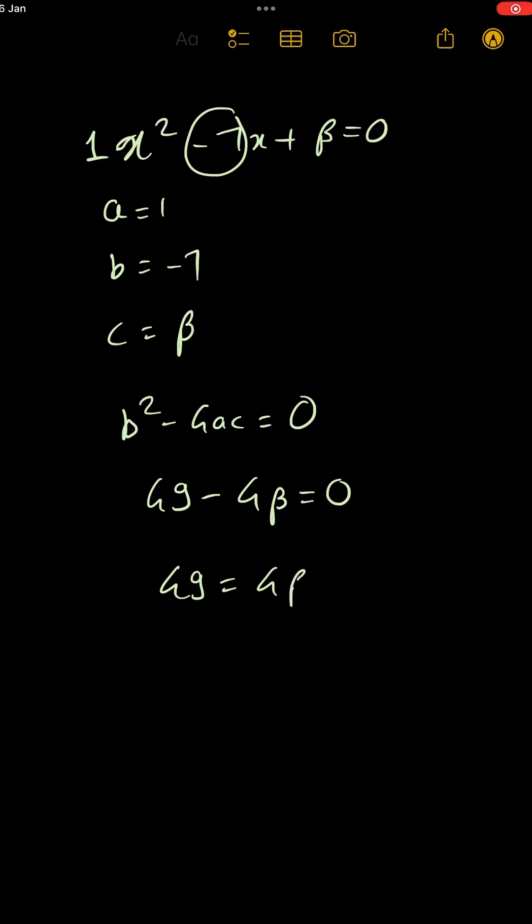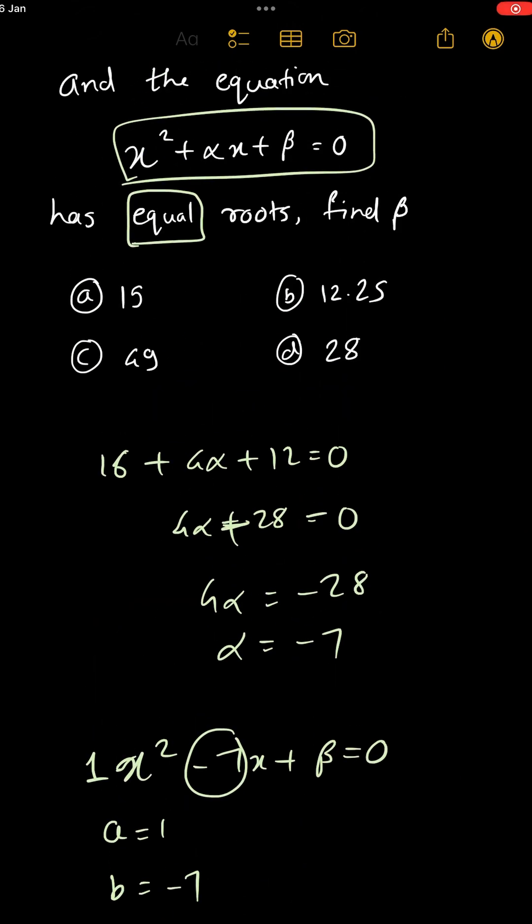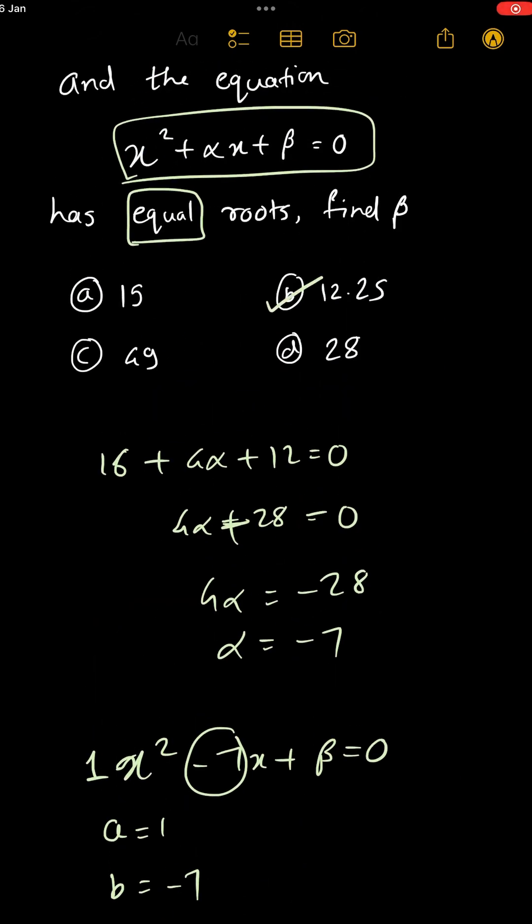So then 49 = 4β, which means β = 49/4. If you check on your calculator, this gives you 12.25, which is option B.